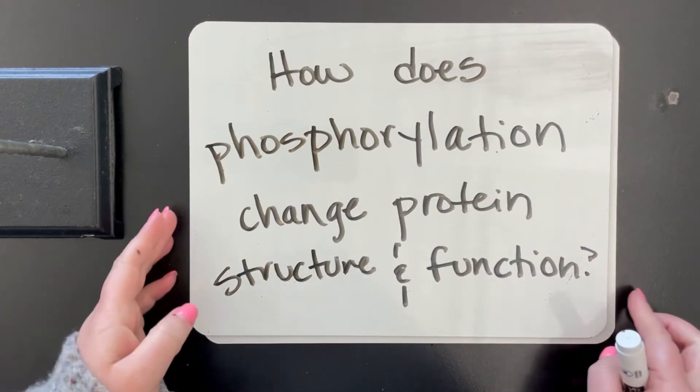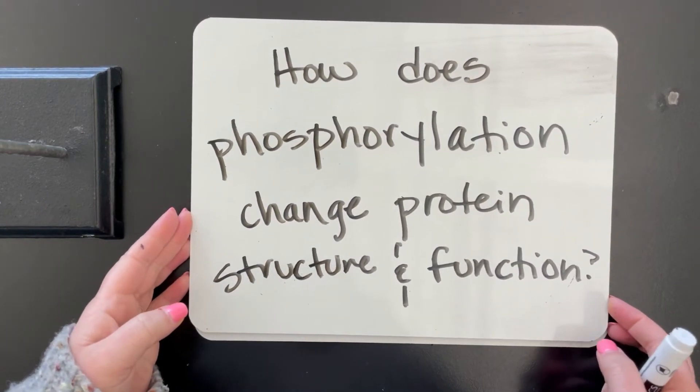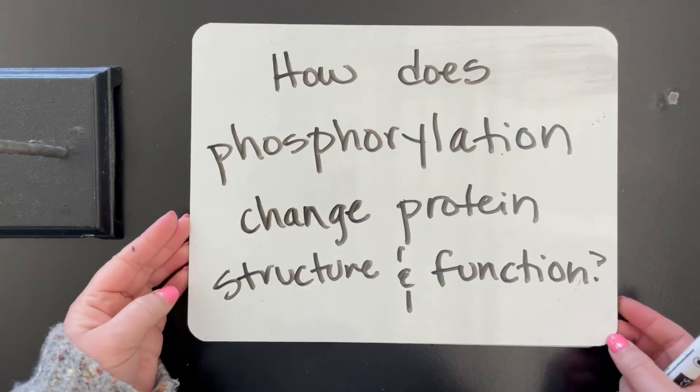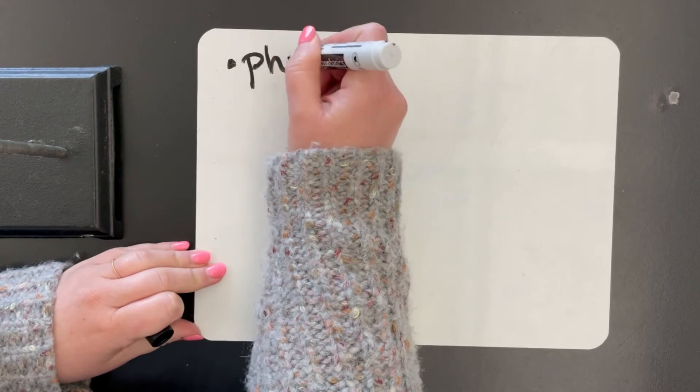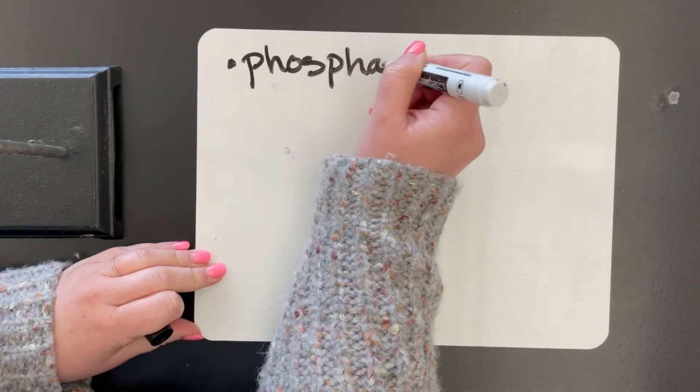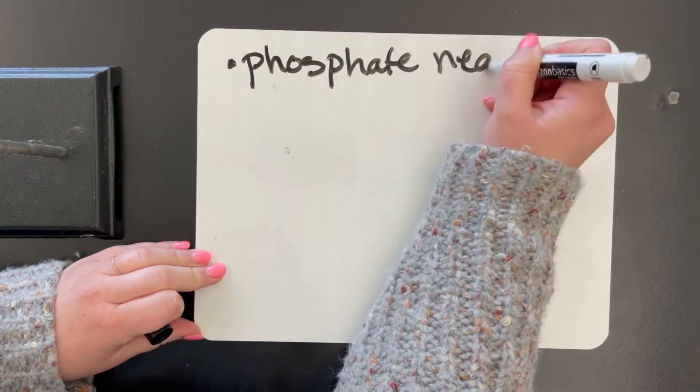So let's go ahead and summarize. How does phosphorylation change protein structure and function? So the key points here that we need to know is that phosphate, those phosphate groups, are negatively charged.